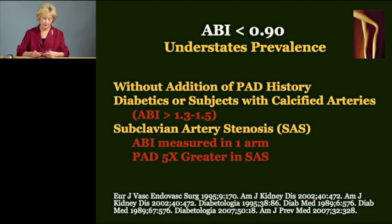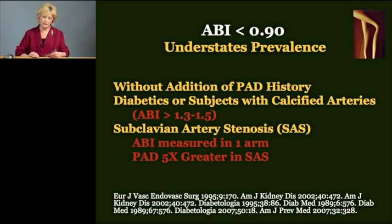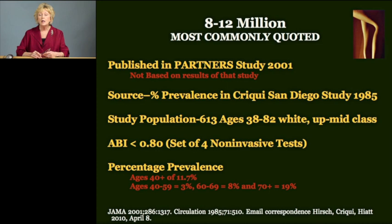ABI less than 0.9 will understate the prevalence of the disease unless you add in the history of PAD. In addition, in diabetics, those with chronic kidney disease, or other people with calcified arteries, you will get falsely elevated ABIs — so in those populations, ABI does not give you an accurate reading of the prevalence of PAD. Finally, in patients with subclavian artery stenosis, if the ABI is measured in one arm only it will understate prevalence, and it's important to note that in patients with subclavian artery stenosis there's a 5 times higher prevalence of PAD.